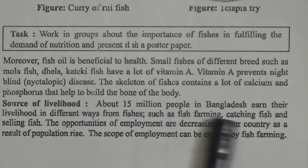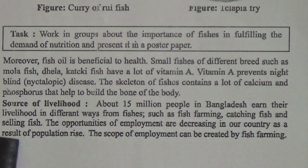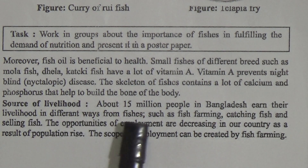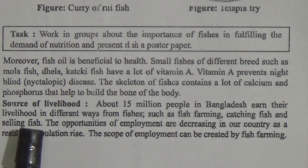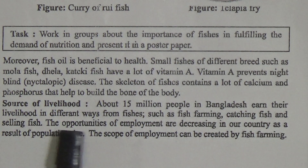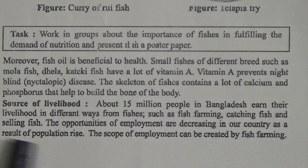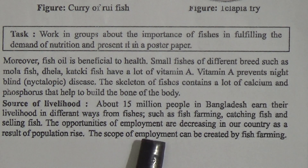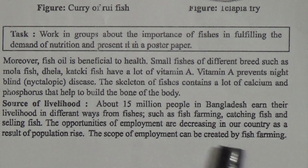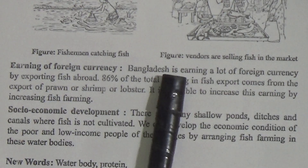Source of livelihood: about 15 million people in Bangladesh earn their livelihood in different ways from fishes, such as fish farming, catching fish, selling fish, etc. The opportunities of employment are decreasing in our country as a result of population rise. The scope of employment can be created by fish farming.